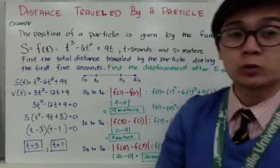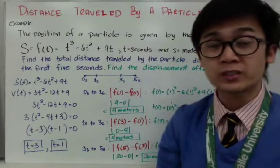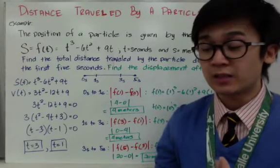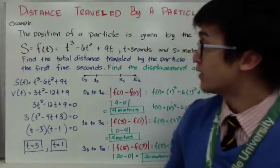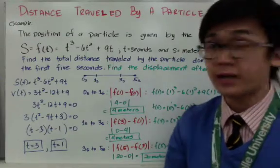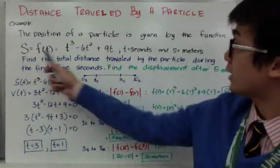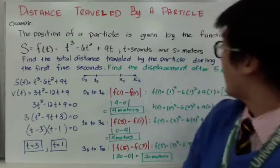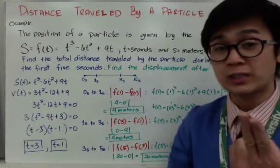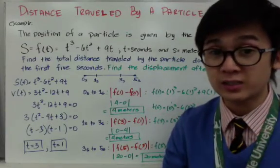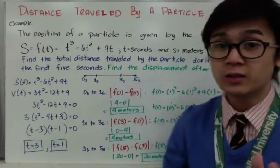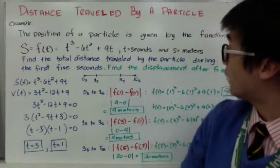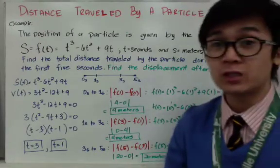In this example, we will answer questions about how much distance a particle travels in a given interval. The position of a particle is given by s equals t cubed minus 6t squared plus 9t, where t is in seconds and s is in meters. We need to find: (1) the total distance traveled during the first five seconds, and (2) the displacement after five seconds.